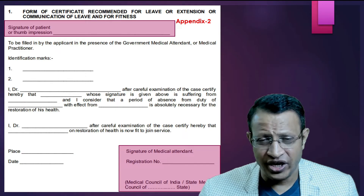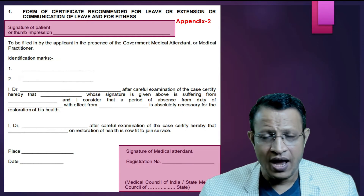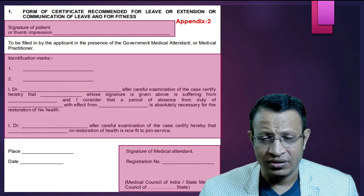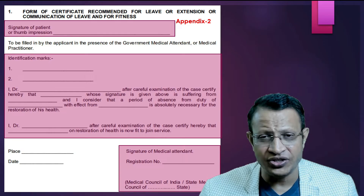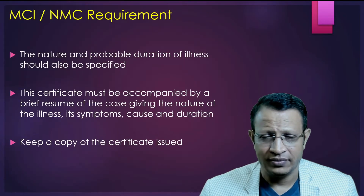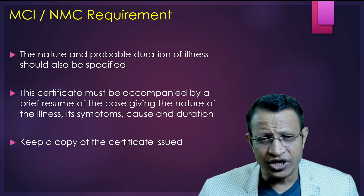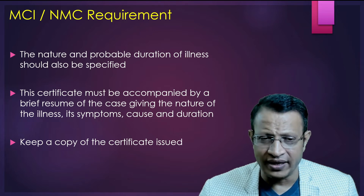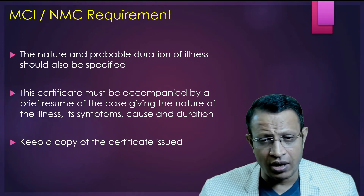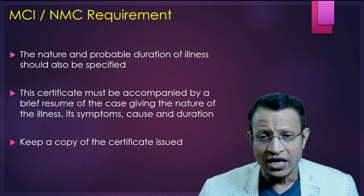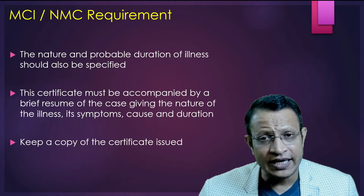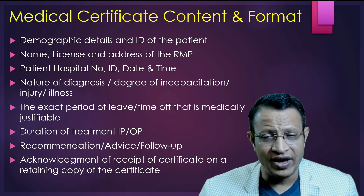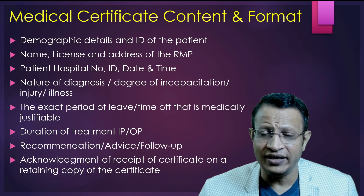The first part is the identification of the client, that is the patient — either a signature or thumb impression can be done. Further, the doctor's identification: his name, signature, and licence to medical practice number has to be given. And finally, the format in which what is the illness, what is the assessment, what are the findings, treatment and recommendation — whether fit or unfit for duty — will be commented here. The nature and probable duration of illness need to be documented. The certificate may be accompanied by a brief resume of the case giving the nature of the illness, symptoms and duration. Whenever you issue a certificate, please keep a copy.